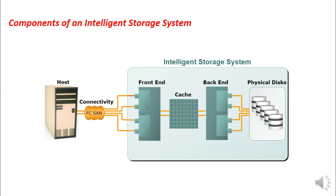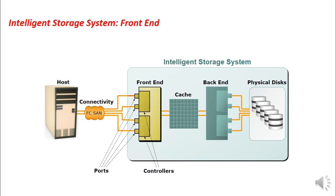Now let us look at the components of an Intelligent Storage System. There are four major components: the front end, a cache, a back end, and a bunch of physical disks. The front end consists of two components — the front end ports and the front end controllers.